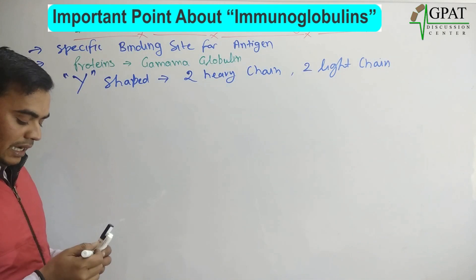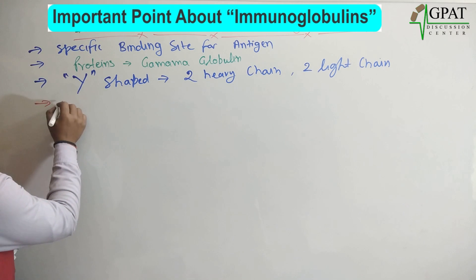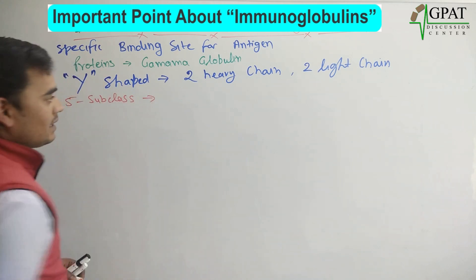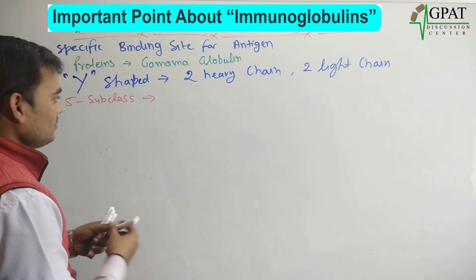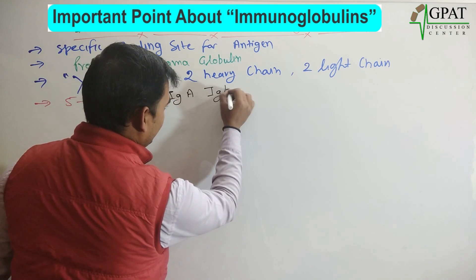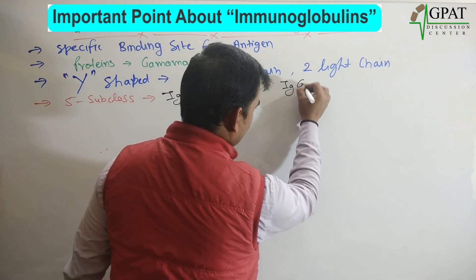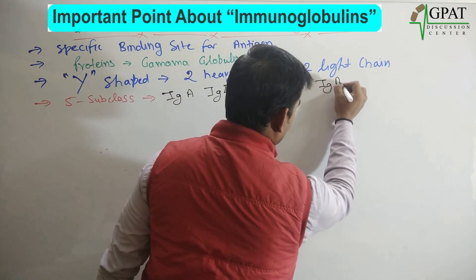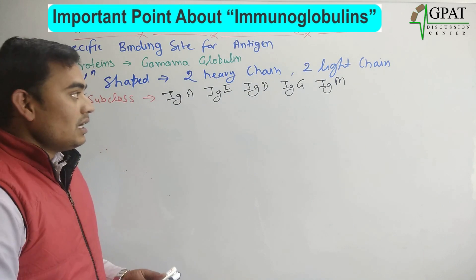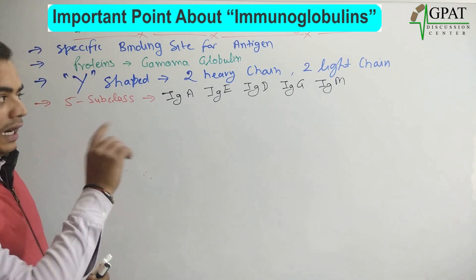Immunoglobulins are subclassified or subdivided into five categories. These five subclasses are IgA, IgE, IgD, IgG, and lastly IgM. These are the five subclasses of immunoglobulins, and all of them have different functions and different locations. I will discuss them one by one.